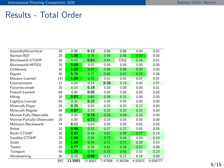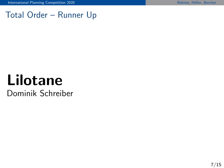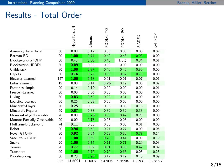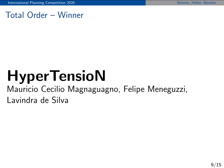These are the results of the total order track in the usual IPC table format, where every row is a domain and every column a planner. You see the domain score per planner per domain, all normalized to one, and the greener the cell the higher the score. Sixth place goes to PI HIPOP, fifth place to Ciadex, fourth place to PDDL4J partial order version, and third place to PDDL4J in the total order version. Second place and runner-up goes to Lylotane, written by Dominic Schreiber — congratulations. And the winner of the total order track is Hypertension, developed by Mauricio Cecilio Magna-Guagno, Felipe Meneguzzi, and Lavindra De Silva. Congratulations to you three.